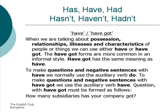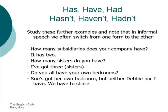Questions with 'have got' must be formed as follows. How many subsidiaries has your company got? Study these further examples and note that in informal speech we often switch from one form to the other. How many subsidiaries does your company have? It has two. How many sisters do you have? I have got three. Do you all have your own bedrooms? Sue's got her own bedroom but neither Debbie nor I have. We have to share.